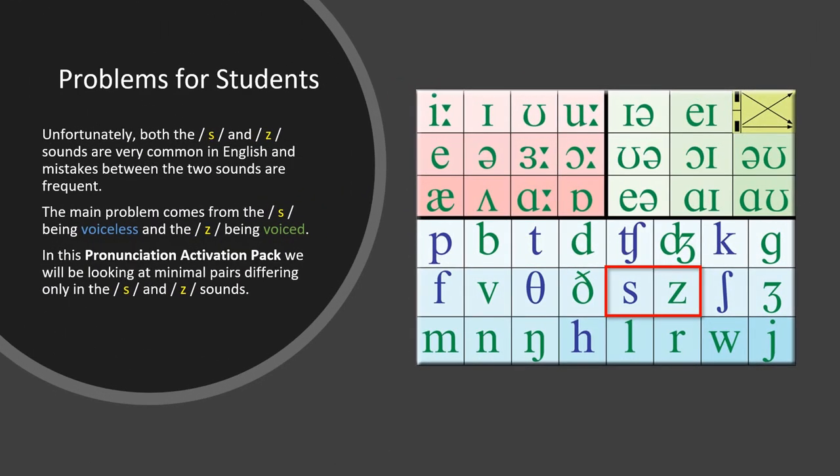Problems for Students. Unfortunately, both the S and Z sounds are very common in English, and mistakes between the two sounds are frequent. The main problem comes from the S being voiceless and the Z being voiced. In this pronunciation activation pack, we will be looking at minimal pairs differing only in the S and Z sounds.